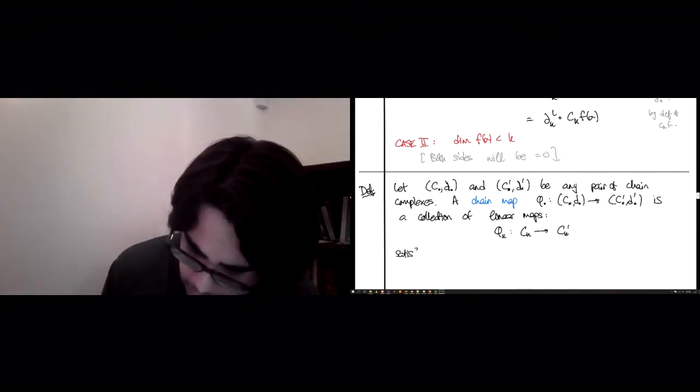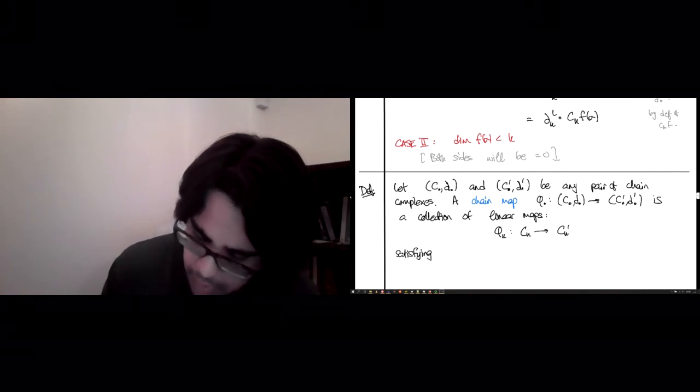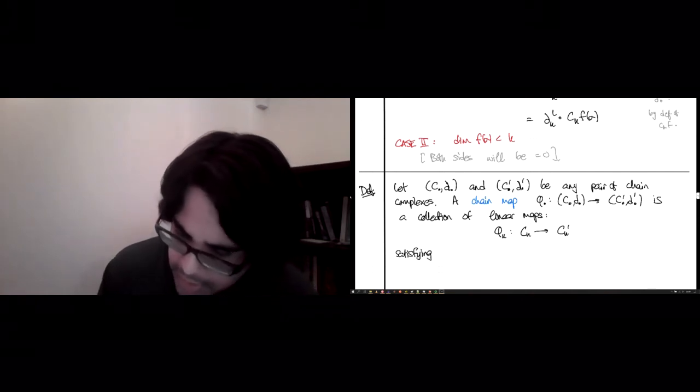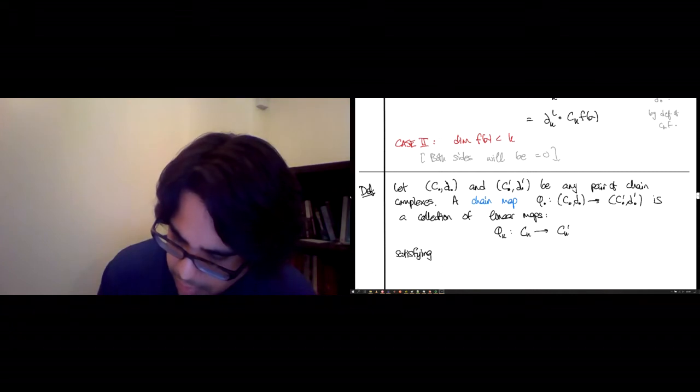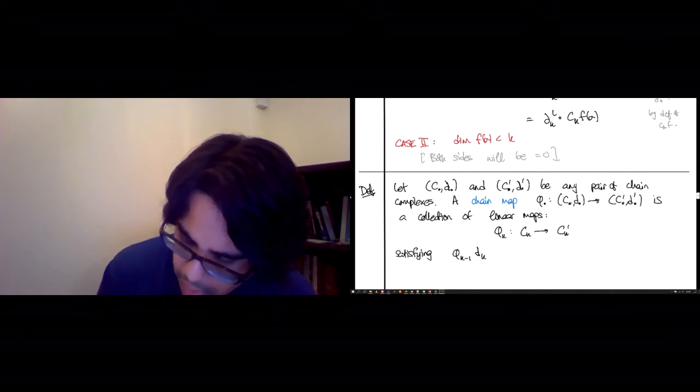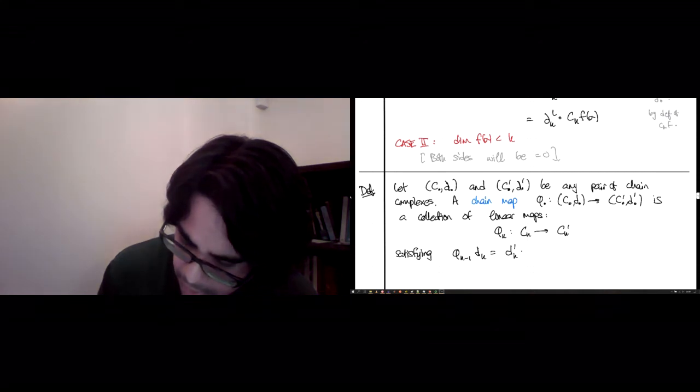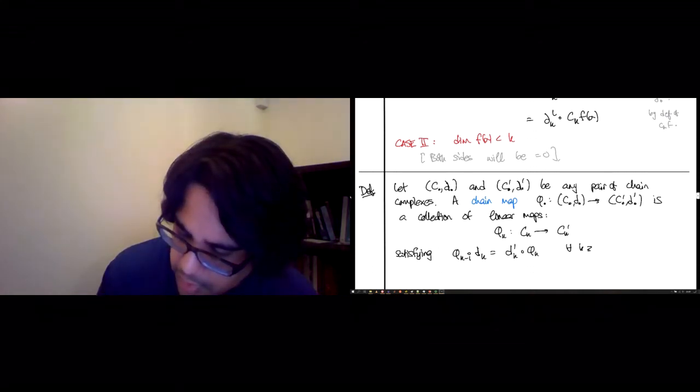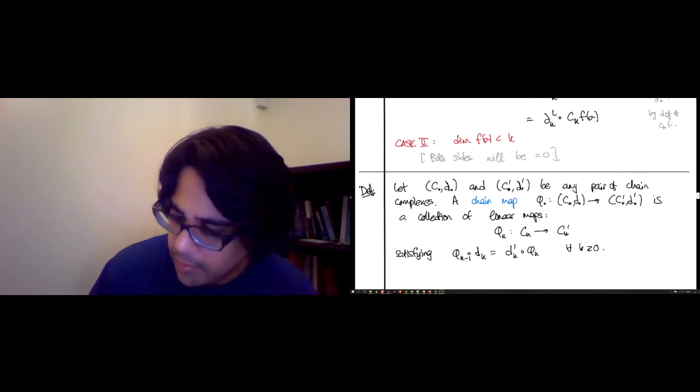So they're going to be one in each dimension, so they send the chains to the chains. This is what our c_k(f) was doing.